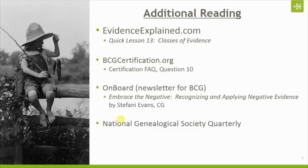The Board for Certification of Genealogists, bcgcertification.org, has a Becoming Certified FAQ where question number 10 specifically deals with negative evidence. They also have a newsletter called On Board — $15 a year — and there was recently an article by Stephanie Evans, a CG, called Embrace the Negative: Recognizing and Applying Negative Evidence. She does a great job reviewing negative evidence and providing some concrete examples.